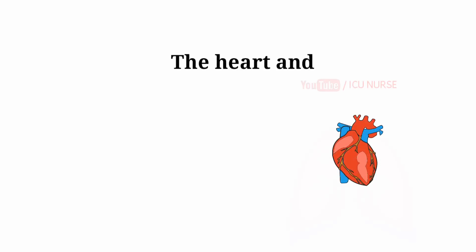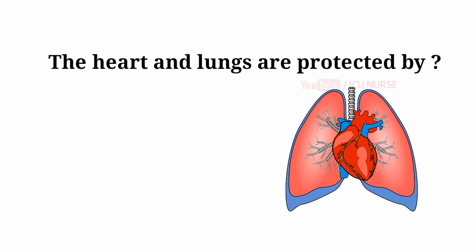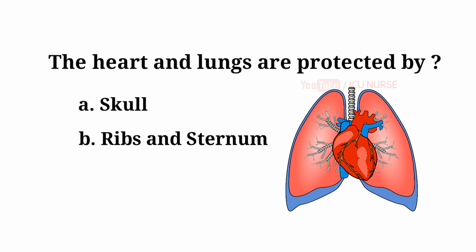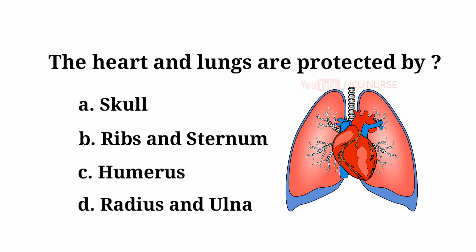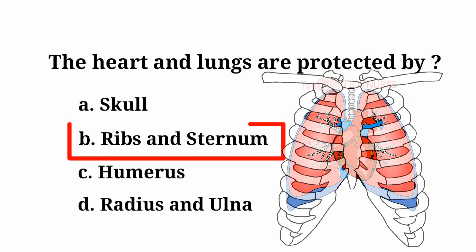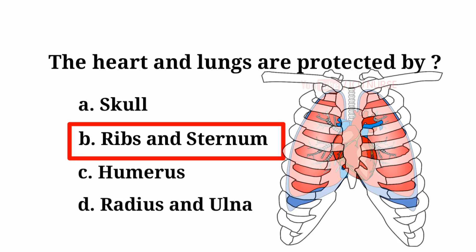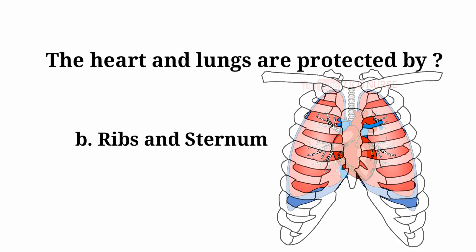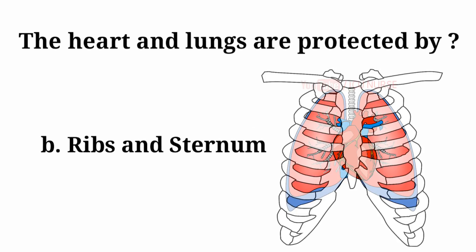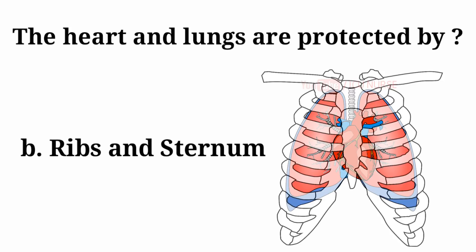The heart and the lungs are protected by: A. Skull, B. Ribs and sternum, C. Humerus, D. Radius and ulna. And the answer is B. Ribs and sternum. The heart and lungs are protected by ribs and sternum.